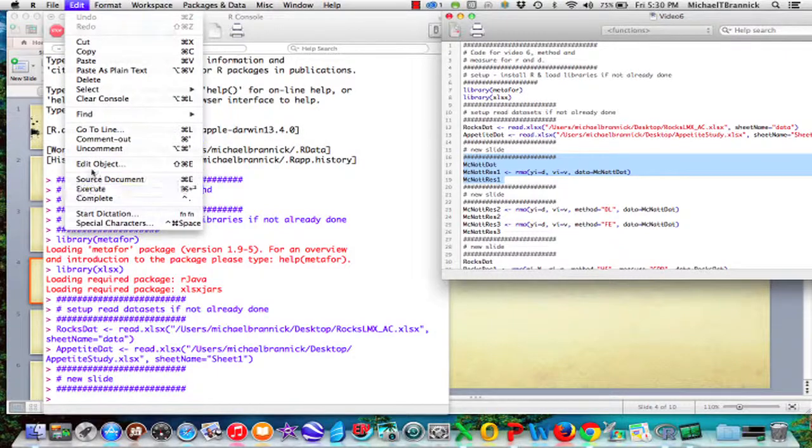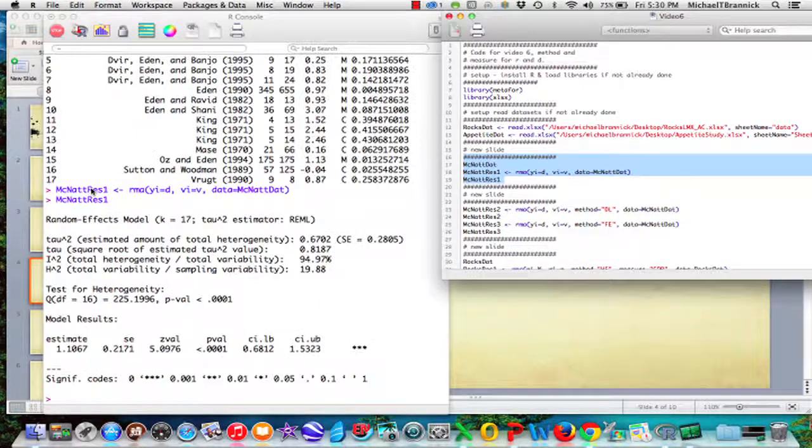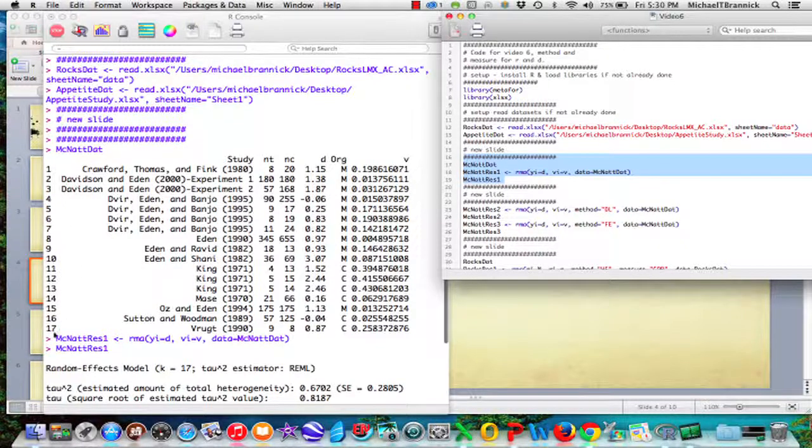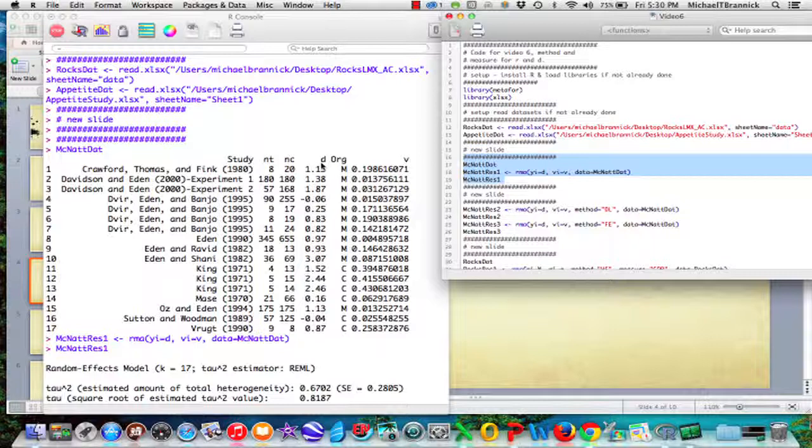The first thing I want to do is run this McNatt item. Edit, execute. Okay, so here's the McNatt data. So there are 17 effect sizes. You see the names for the studies.